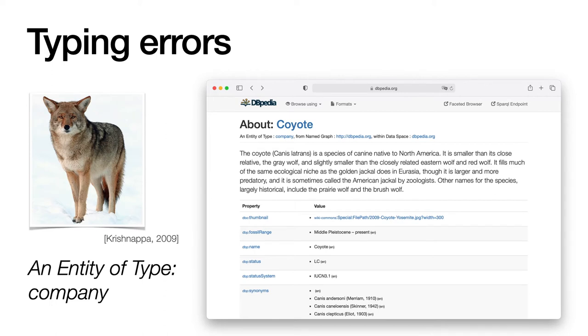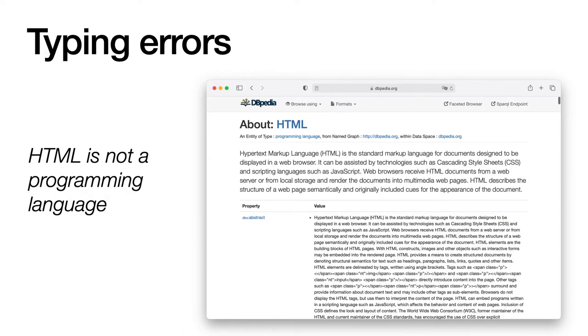Unfortunately, there are errors in this type information. For example, coyote, an animal, is typed as a company. And I hope you all agree with me that HTML is definitely not a programming language. However, it's typed as a programming language in DBpedia.